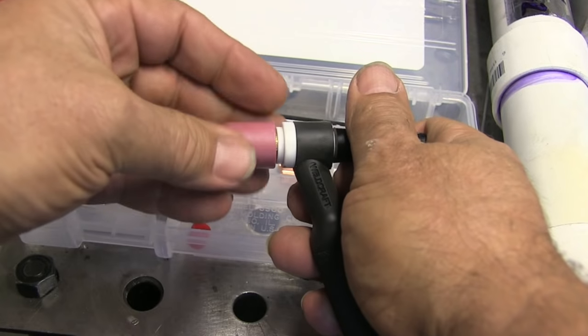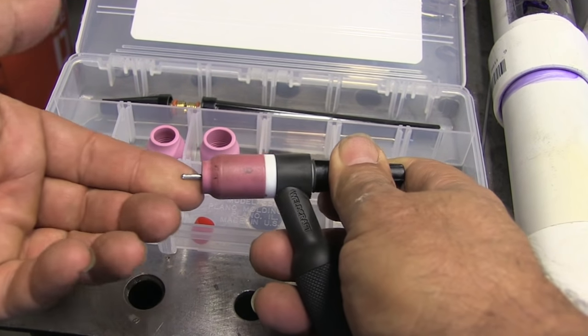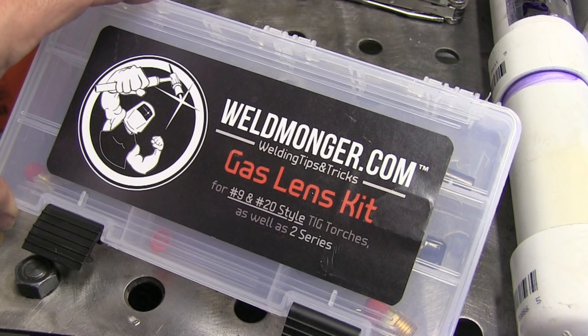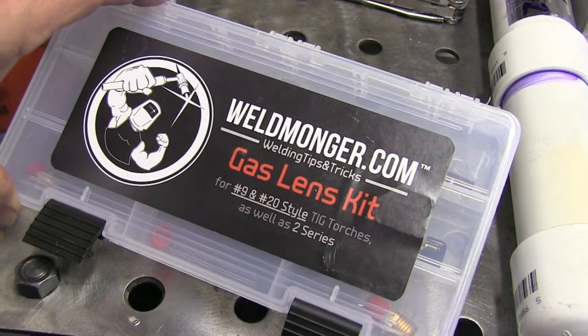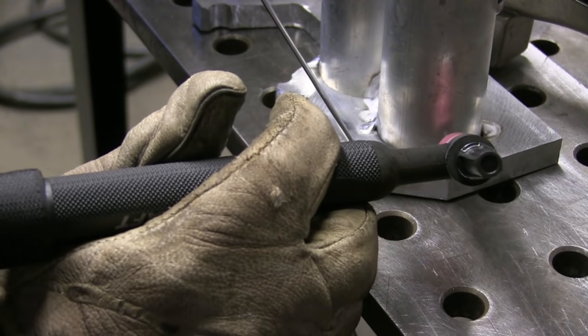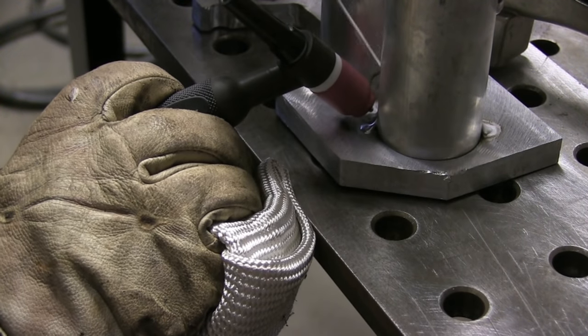So I'm gonna put the gas lens on there and a number six cup and I should be able to get away with at least that kind of an extension there, may have to bump the flow rate up just a little bit but my thinking is that's going to work a lot better than the number five standard and I wound up just using it for the whole thing. I just didn't extend the electrode out quite as far except for in between them.